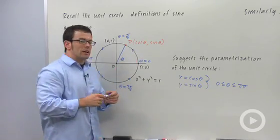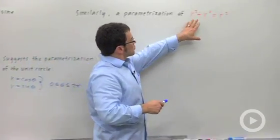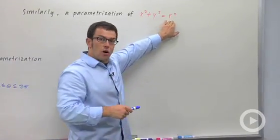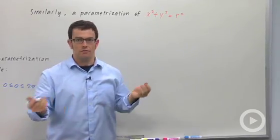We'll talk about clockwise parametrizations a little bit later. Now let's talk about a parametrization of x squared plus y squared equals r squared. So it's also a circle, but this time the radius is r. Very similar.